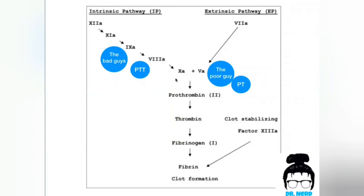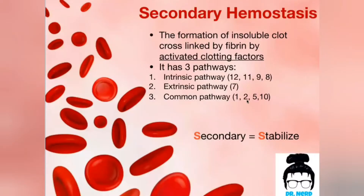A way to remember the factors involved in the common pathway — 1, 2, 5, and 10 — is to remember the big brother, 10. Memorize 10, and then try to remember what are the three numbers that whenever they are multiplied together will lead to 10. So 1 multiplied by 2 multiplied by 5 gives 10. That's how you remember the four factors involved in the common pathway.